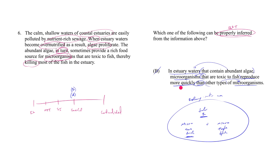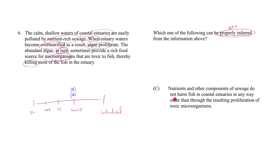C says: 'nutrients and other components of sewage do not harm fish in coastal estuaries in any way other than through the resulting proliferation of toxic microorganisms.' On first blush this might seem comparative, but it's better understood as a limiting statement. Like saying, 'I do not drink any kind of soda other than Coke' — meaning Coke is the only soda I drink. It's not really a comparison; it's setting a limit.